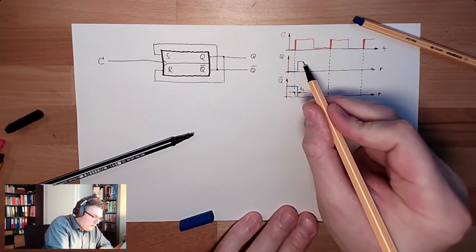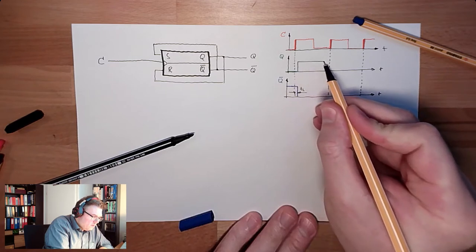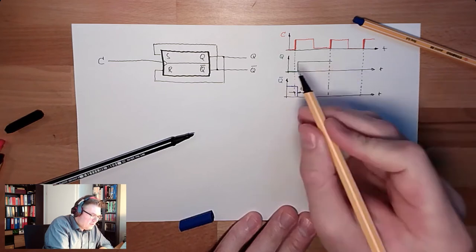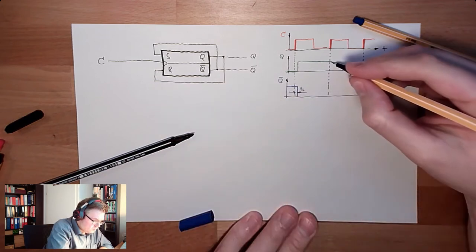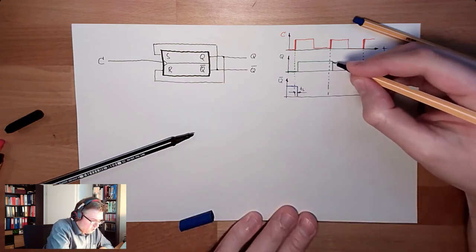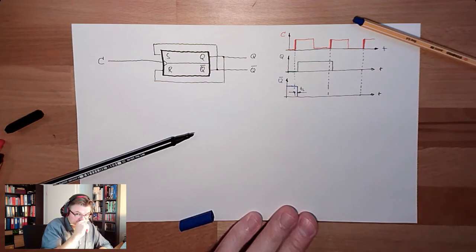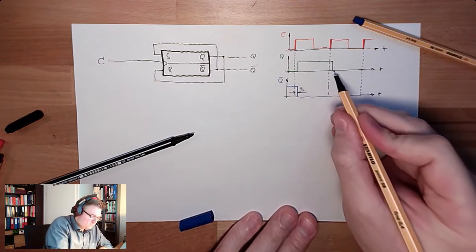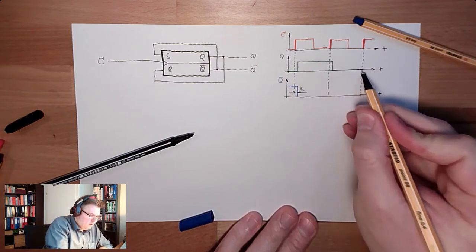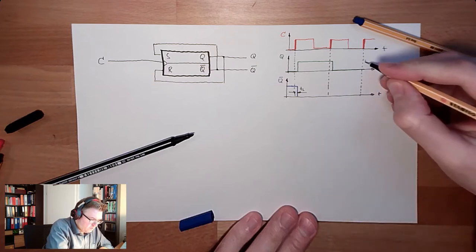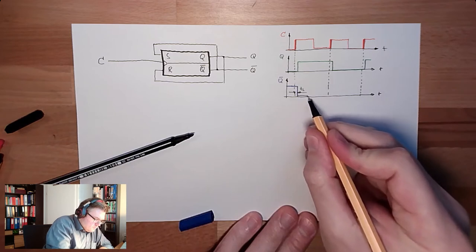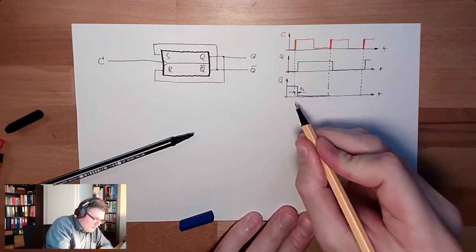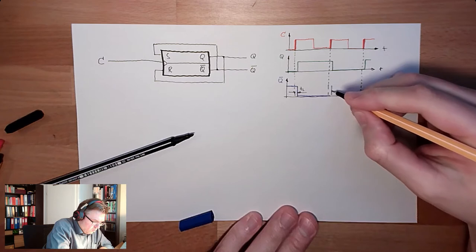It will stay there until the next rising edge. Then, here we have one. So, it will reset. So, it will disappear, also with a latency. And later, here it will be reappearing again with the same latency. So, we can see the output toggling.